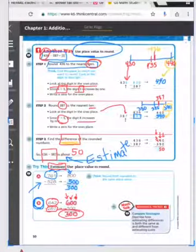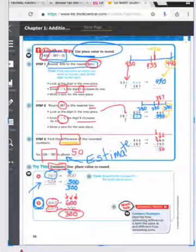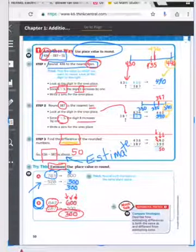The share and show problems, you can cross out number 1 on page 51. Just do 2, 3, and 4. And again, you're rounding and finding the estimate.